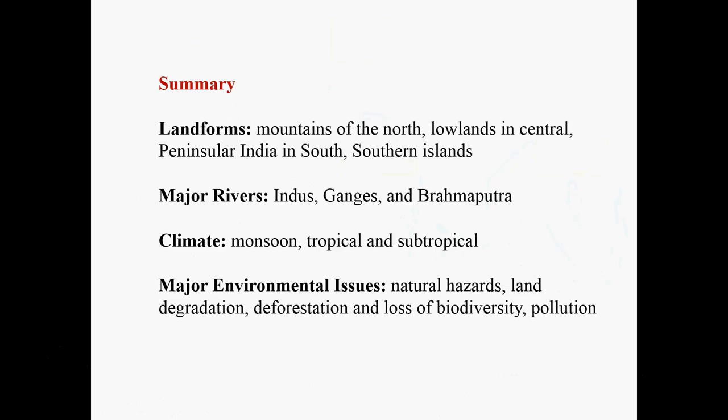In summary, in this lecture we discussed the physical geography of South Asia. In terms of landforms, we divided the region into four major landform regions: the mountains of the north, lowlands in the central, the peninsula of India in the south, and the southern islands. We also discussed three major rivers: the Indus, the Ganges, and the Brahmaputra. In terms of climate, we discussed monsoon patterns, different seasons, and the mostly tropical and subtropical climate of South Asia. In terms of major environmental issues, we discussed natural hazards, land degradation, deforestation, loss of biodiversity, and the problem of pollution in South Asia.